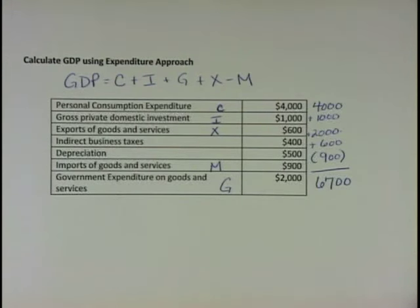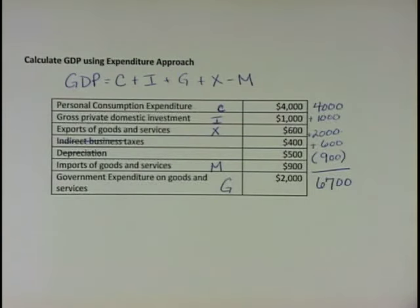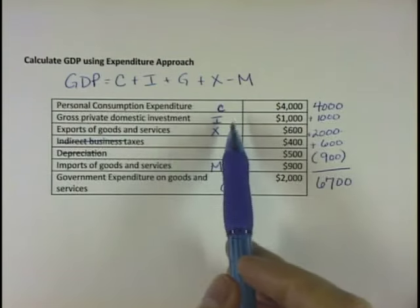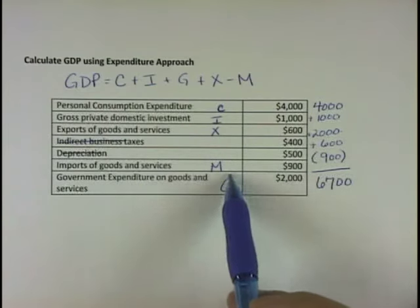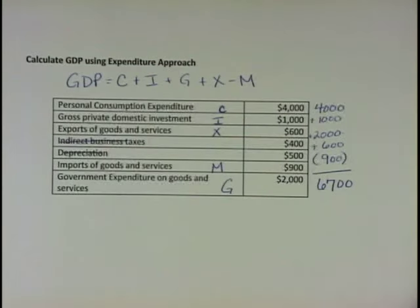There's a little more information here — we've got indirect business taxes and depreciation. We use those to calculate other things, but for GDP those aren't important, so we don't use them here. On a test, you'll likely see extra information you don't need — that's to make sure you understand what's actually involved. So remember: it's C plus I plus G plus X minus M. Make sure you subtract out M — don't add it in.